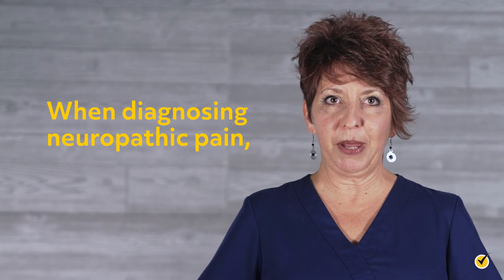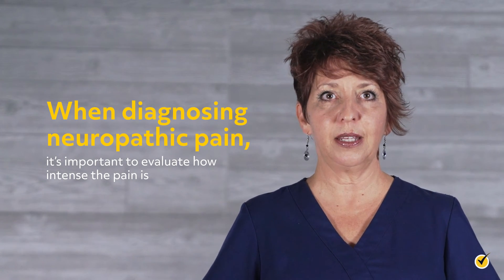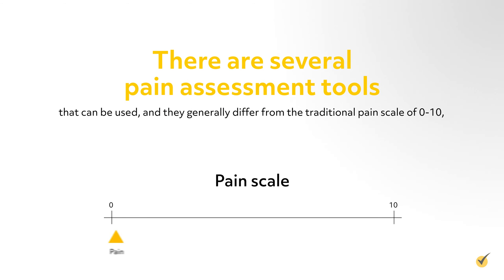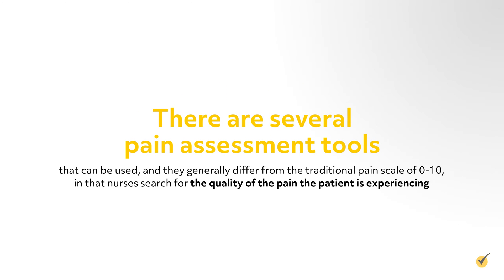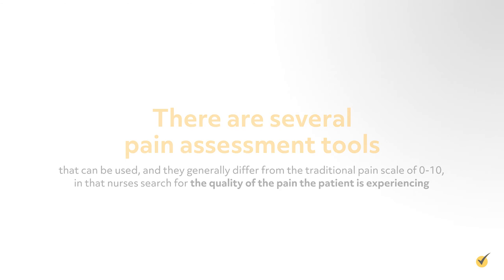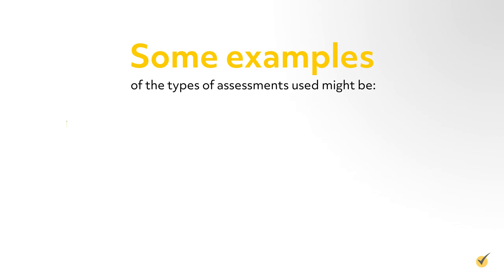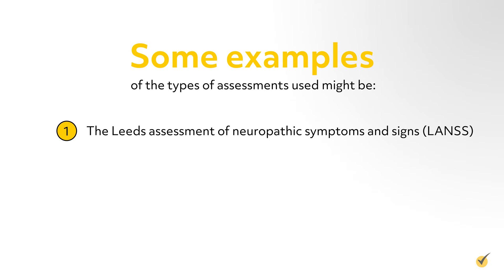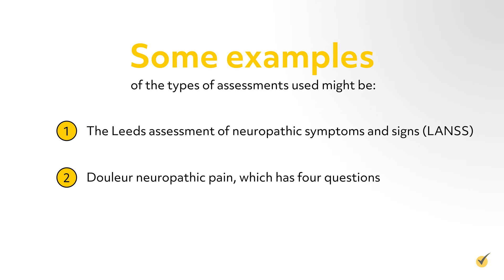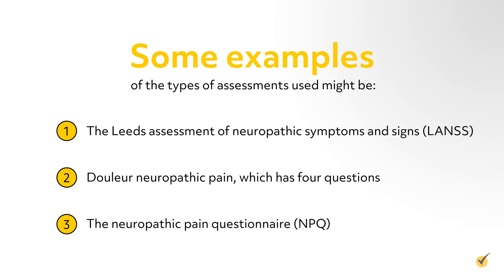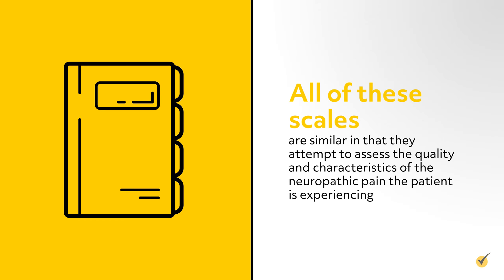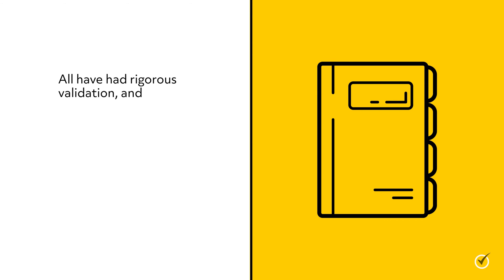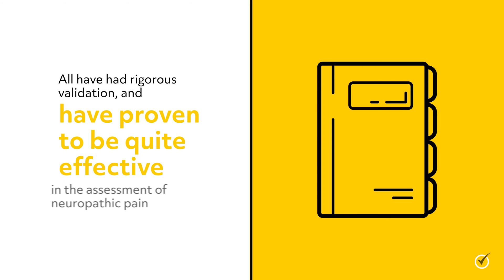When diagnosing neuropathic pain, it's important to evaluate how intense the pain is. There are several pain assessment tools that can be used, and they generally differ from the traditional pain scale of 0 to 10, in that nurses search for the quality of the pain the patient is experiencing. Some examples include the LEADS assessment of neuropathic symptoms and signs, the LANDS scale, Doleur neuropathic pain with four questions, and the Neuropathic Pain Questionnaire (NPQ). All of these scales assess the quality and characteristics of neuropathic pain, have had rigorous validation, and have proven to be quite effective.